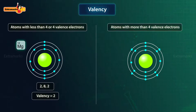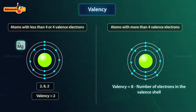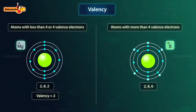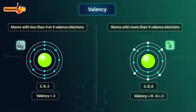For atoms with more than four valence electrons, the valency is given by 8 minus the number of valence electrons. For example, sulphur has the electronic configuration 2, 8, 6. It has six electrons in its outermost shell, hence its valency is determined by subtracting six from the octet, which gives the valency of sulphur equal to 2.